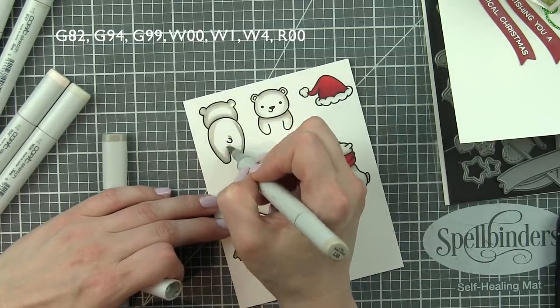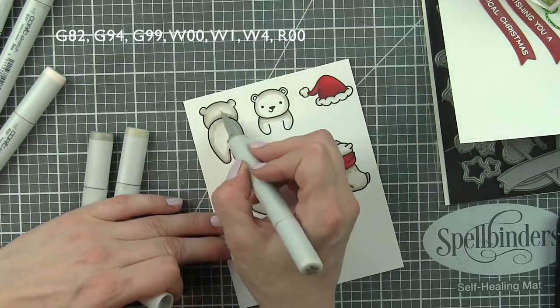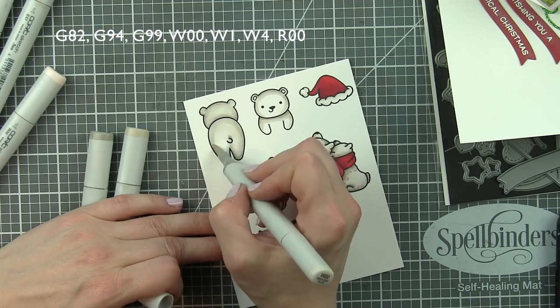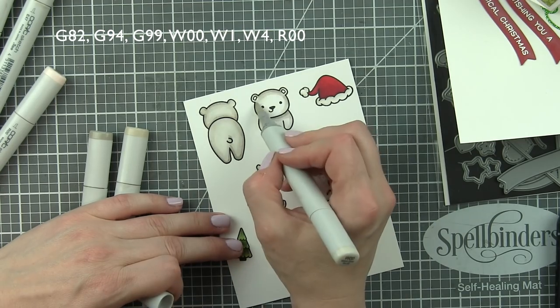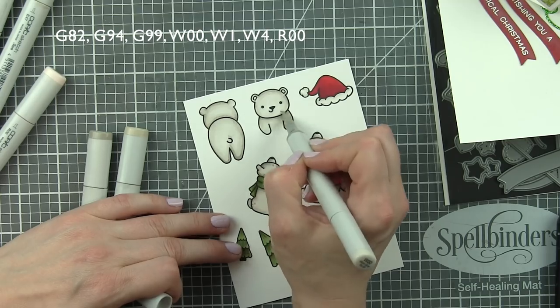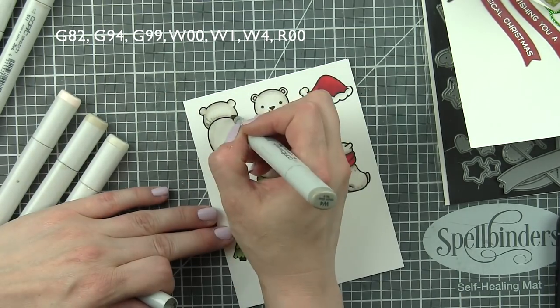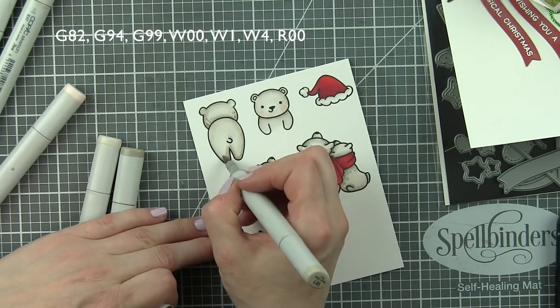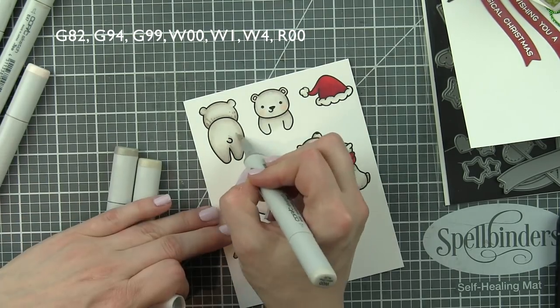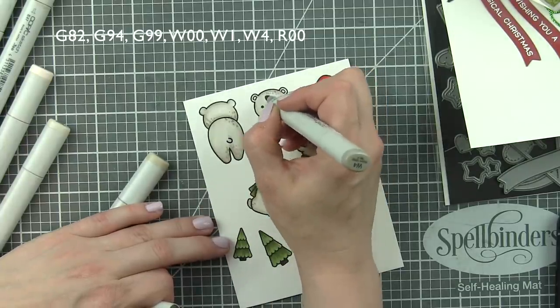Let's color in our last bear. Again, same color combination as the rest of the bears, warm gray 00, 1, and 4. And this one, since we've got the front-facing bear, I'm going to do the insides of his ears and his cheeks with R00, just to give them a little bit of pinkish hint to them, and then blend it all out again and add some little dot detail.